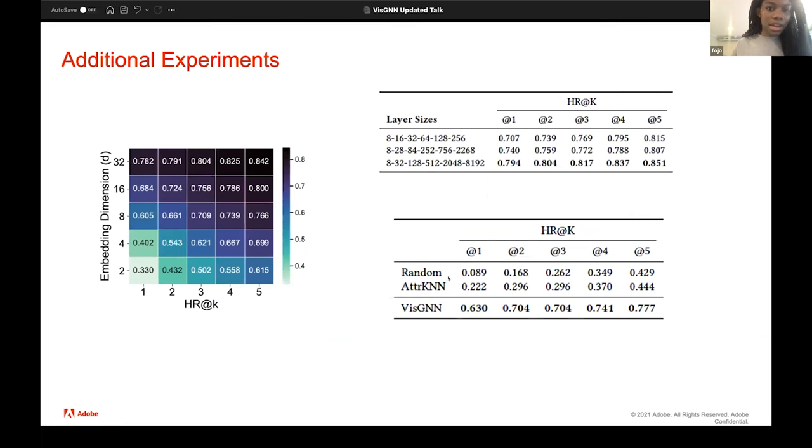And then we did some additional experiments as well. Here, we looked at how embedding dimension had an impact on accuracy in our results. And as the embedding dimension increased, as D increased, the accuracy increased as well. And it improved the VizGNN program. We did something similar for layer size. And as the layer size increased, the results increased as well. We got better results and it improved accuracy. It didn't improve by much, but it did make a difference.